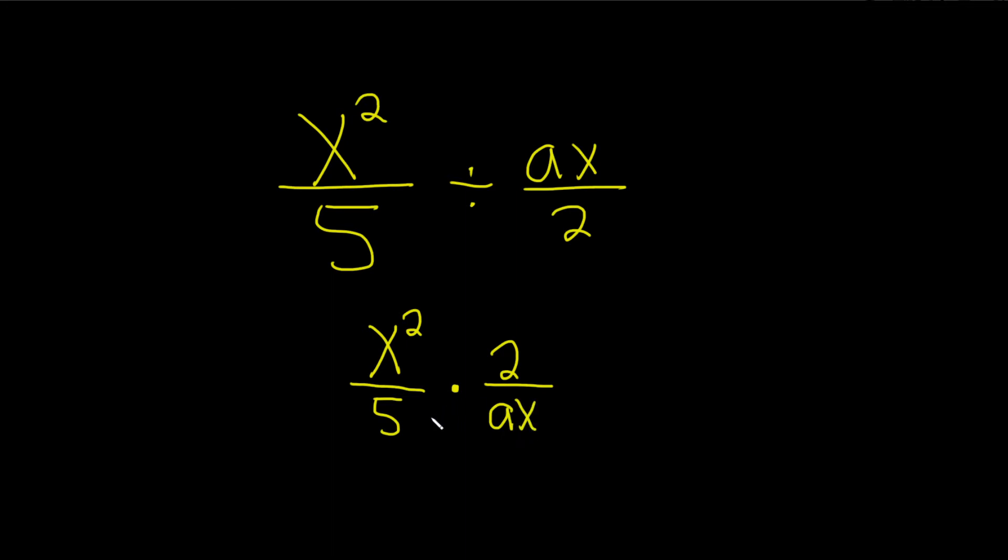Now we're looking to cancel things. The things on the top are allowed to cancel with the things on the bottom. The 2 and the 5, nothing there, nothing with the a. But here we have x squared, and here we have x. So we'll lose an x. This one cancels with one of these, so we're left with 1x. There's 2 of them up here, and we lose 1.